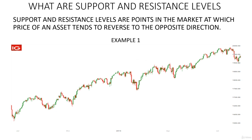What are support and resistance levels? Support and resistance levels are points in the market at which the price of an asset tends to reverse to the opposite direction. In the previous part of the course, we talked about trend lines. Trend lines can also be what we call support and resistance.